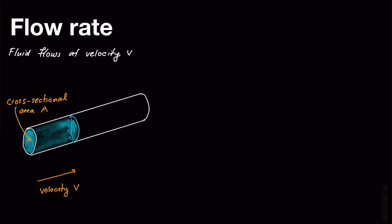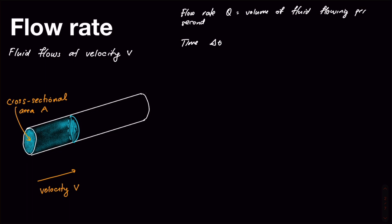Flow rate is basically how much volume of fluid flows past a given point per second. Flow rate, which we normally write as Q, is the volume of fluid that goes past a certain point every second. If we imagine a small elapsed time of delta T seconds, we want to figure out how much fluid has flowed in that delta T seconds.